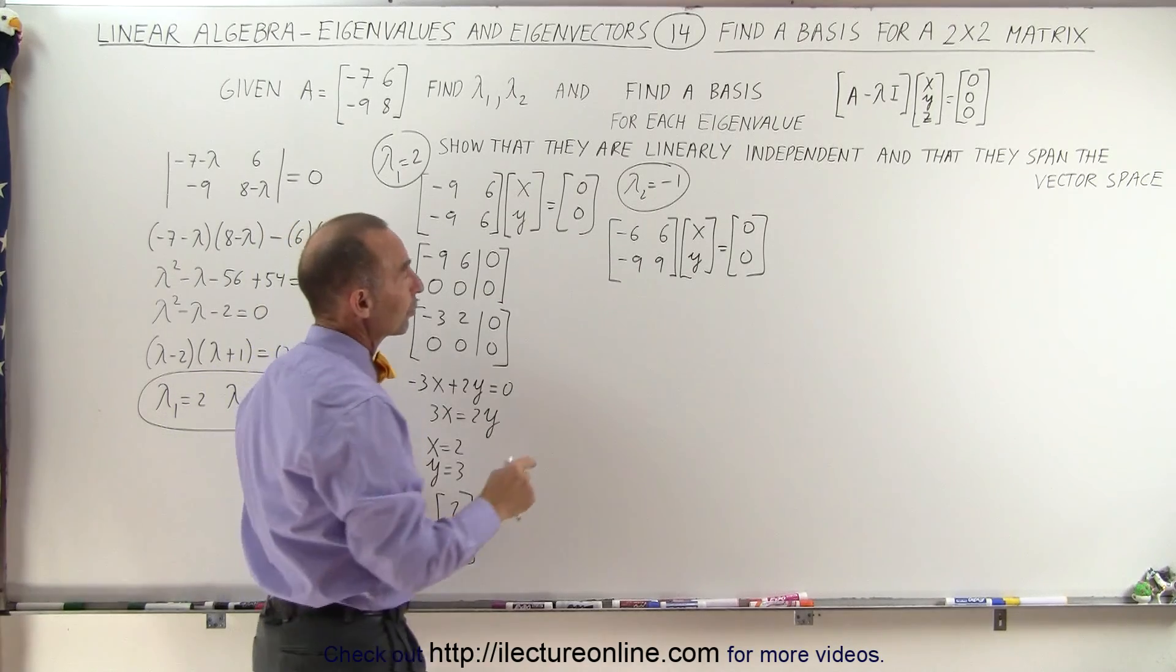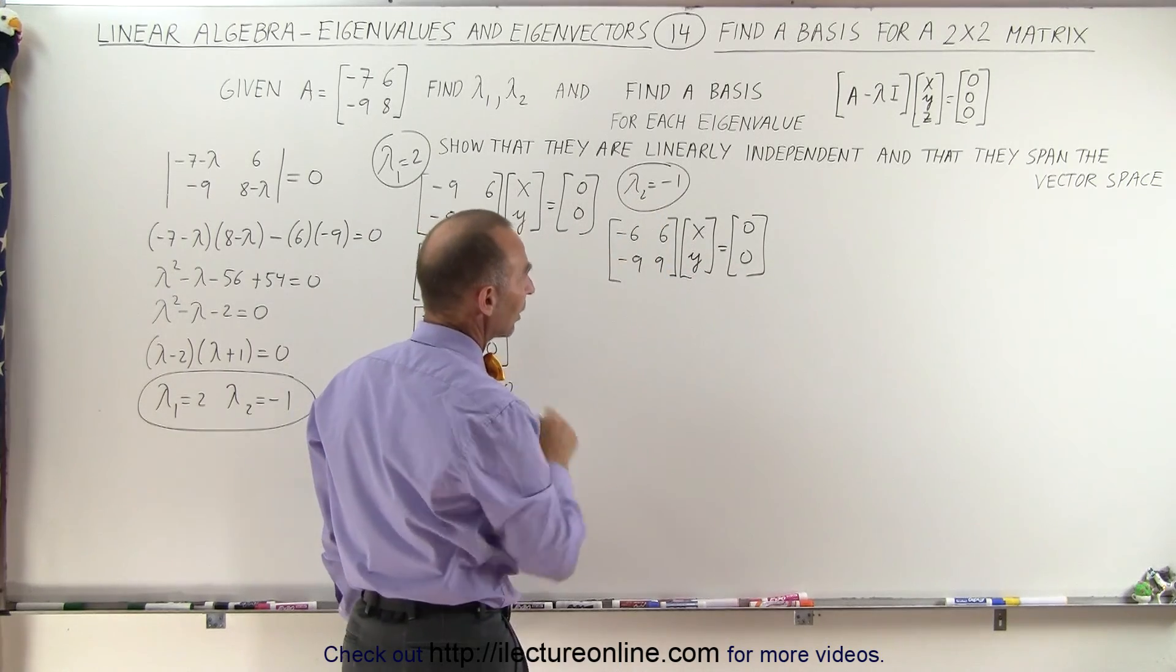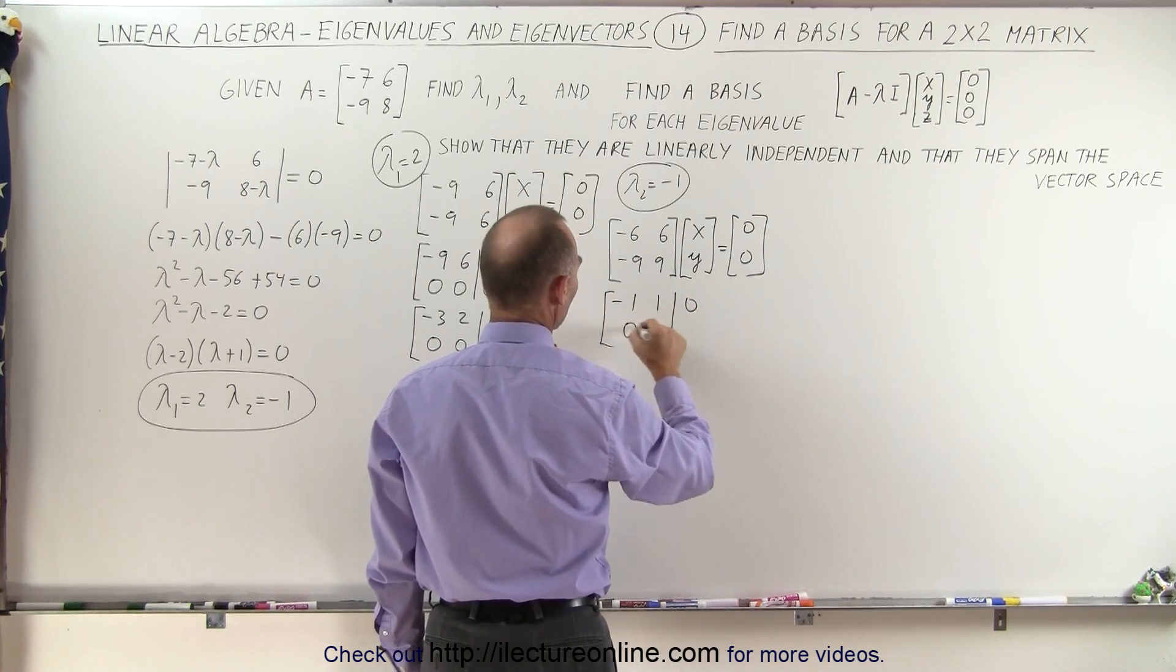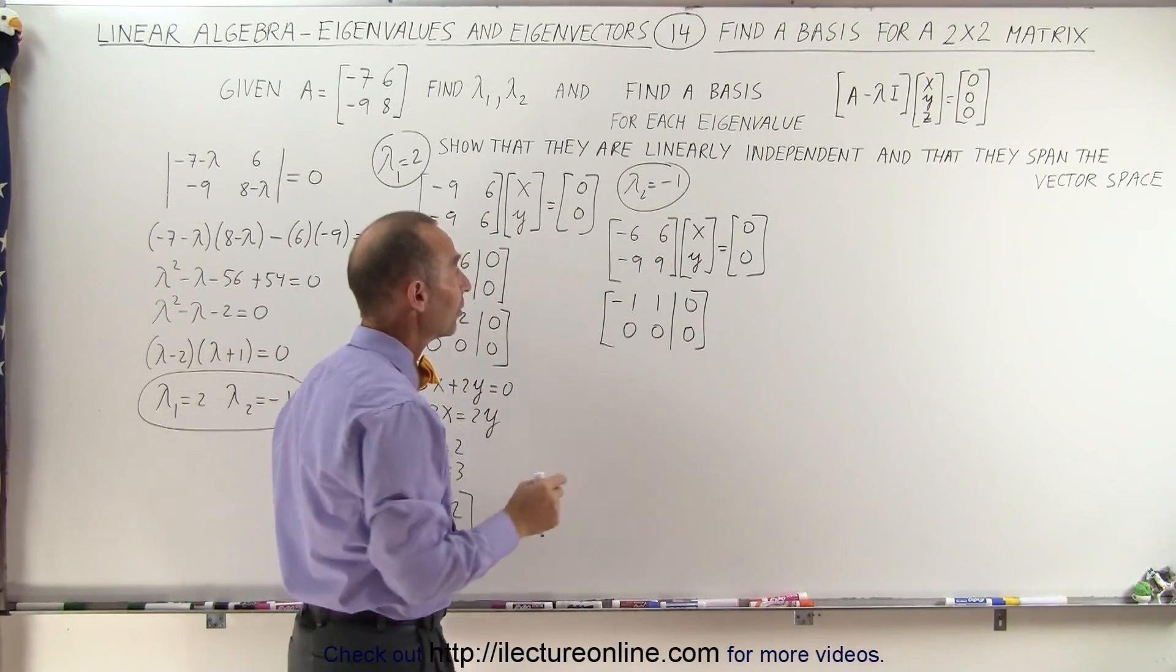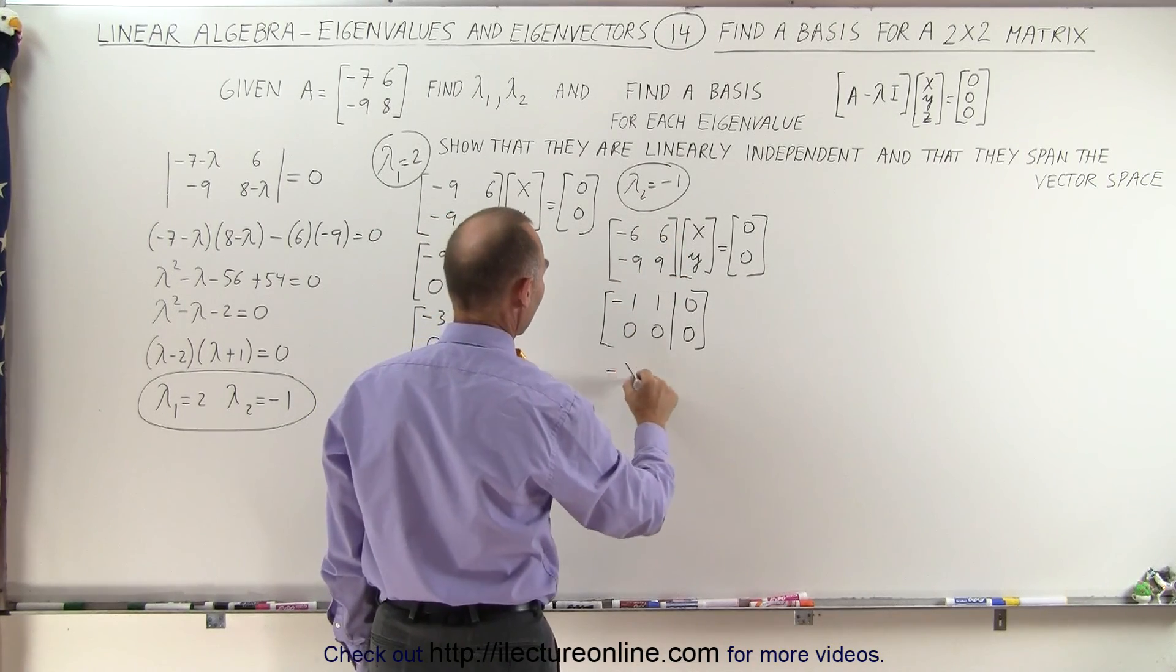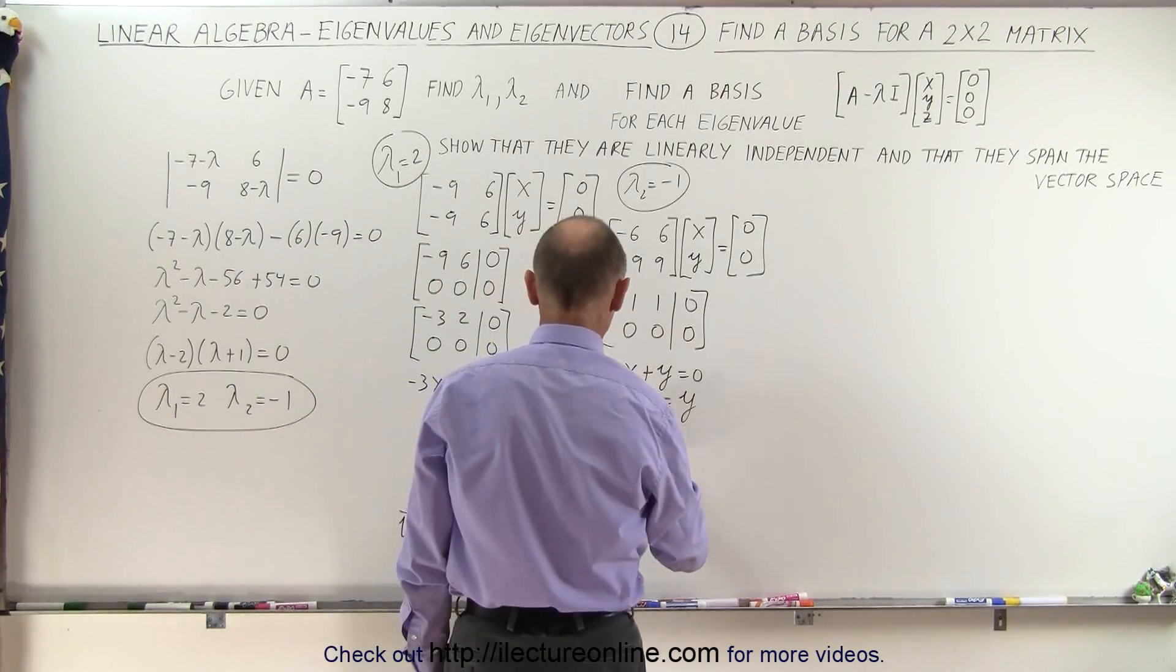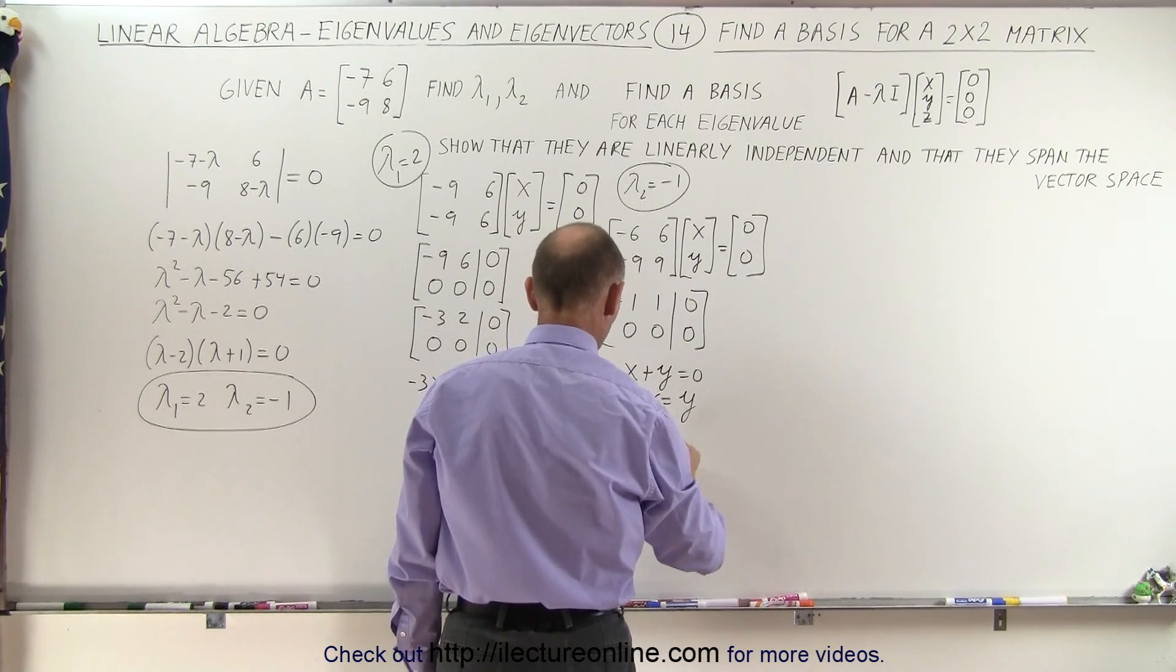Now again, if you look carefully, if we multiply the top row by 1.5, we get the bottom row, so they're essentially the same rows. We can eliminate one of them and divide the top by 6, so this could be solved by writing this as minus 1, 1, and 0, 0, 0, 0. So we eliminated the second row because they're identical rows, and then we can divide the top row by 6 to get negative 1, 1, and 0, which means that negative x plus y equals 0, or x equals y, which means we can set them both equal to 1, which means our second eigenvector associated with this eigenvalue is equal to 1 and 1.